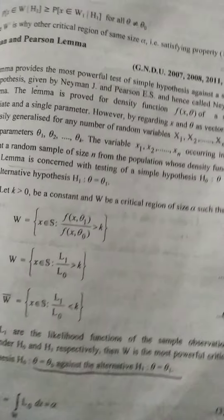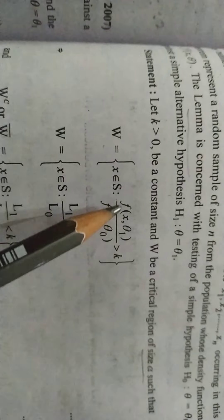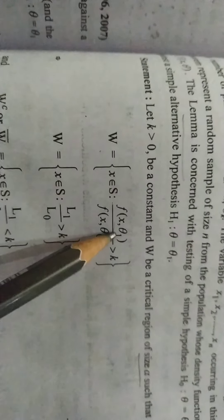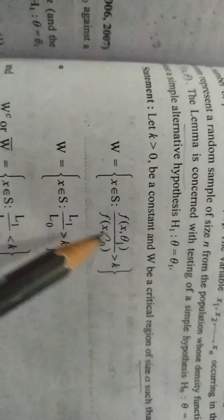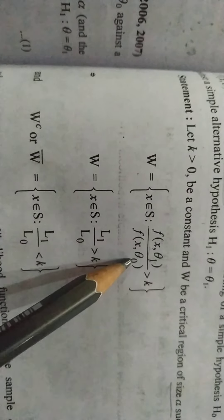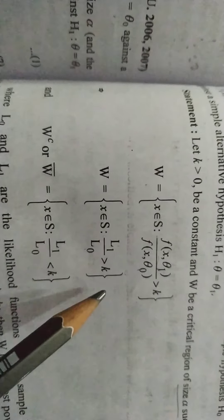Its statement is: if let k is greater than 0 any constant and W is a critical region of size alpha, so that W is defined as f(x, theta1) upon f(x, theta0) greater than k. The theta1 is corresponding to our alternative hypothesis and theta0 will be corresponding to null hypothesis. So L1 has its function and its function is L0. This is my W.